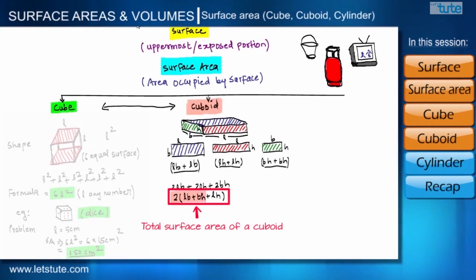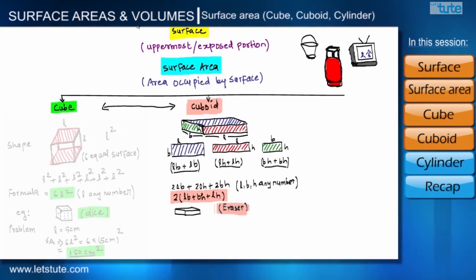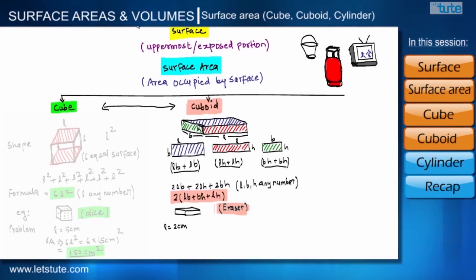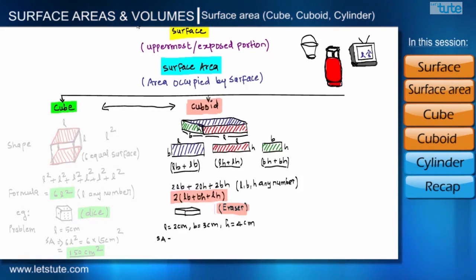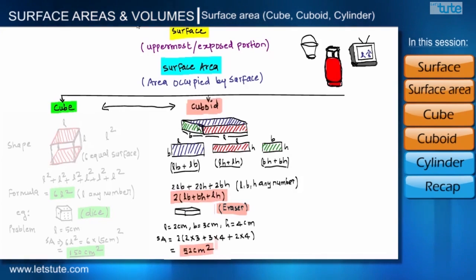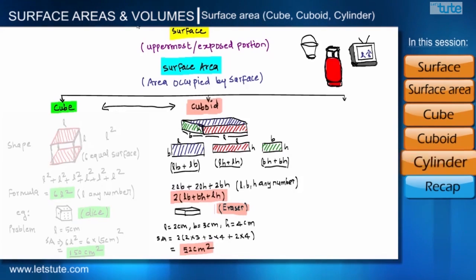This is the total surface area of a cuboid having dimensions L, B, and H, where L, B, and H can be any numbers. An eraser is the best example of a cuboid. Suppose an eraser has length L = 2 cm, breadth B = 3 cm, and height H = 4 cm. The total surface area of this eraser would be 52 cm squared.